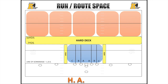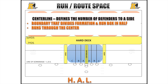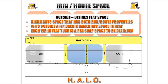The L in HALO stands for center Line. This line is critical because it defines the number of defenders to a side of a formation and provides a boundary that divides the formation and run box in half — this line runs through the center. The O in HALO stands for Outside space, which defines flat space. The outside space is very important to highlight because it is a mixture of both run space and route space properties. Receivers located outside the apex line create an immediate space threat for the defense to defend. If the outside space is void of a defender for each wide receiver, the offense can immediately attack this uncapped space with now screens, bubble screens, jet sweeps, etc.